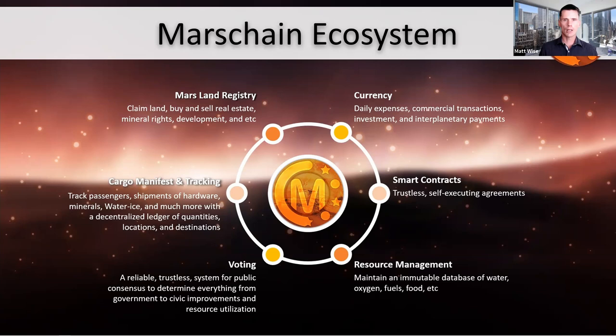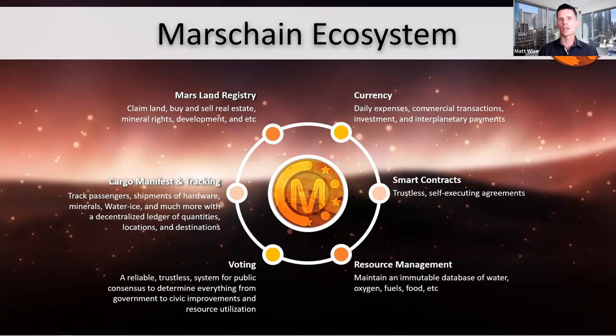This graphic gives you an idea of some of the overlap — these are just a small number of the potentials with the technology: the Mars Land Registry with land claims and information resources can overlap with currency and smart contracts, cargo manifest and tracking, resource management for oxygen and water ice, mineral rights, and voting. James Burke — I believe in an MDRS mission we'll be testing these voting systems on a smaller scale. This is real technology being fielded right now.